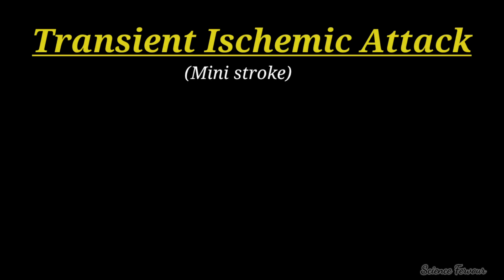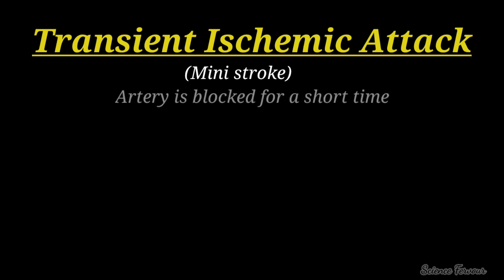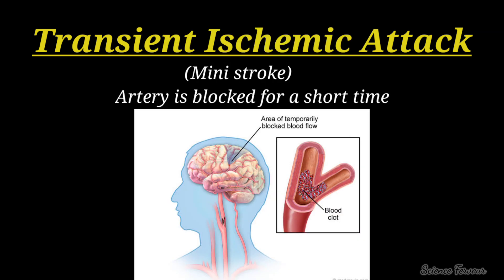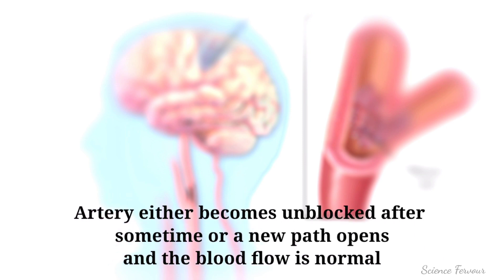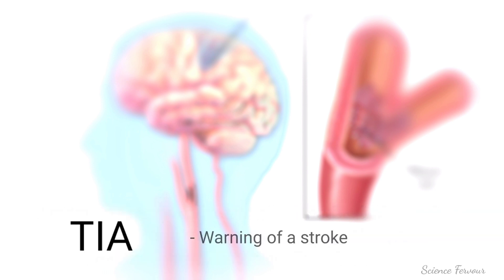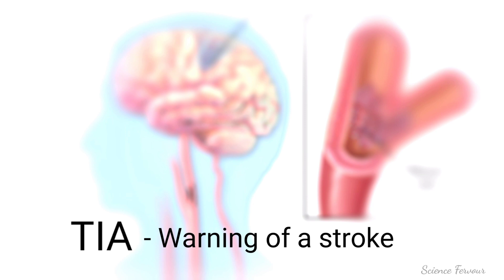Next we will see about transient ischemic attack, also known as mini stroke. If an artery in the brain or one that goes to the brain is blocked for a short time, blood flow slows down or stops — this is known as TIA or mini stroke. When TIA happens, the artery either becomes unblocked after a short time or a new path opens up and blood flow returns to normal. TIA is a serious warning that you may have a stroke.